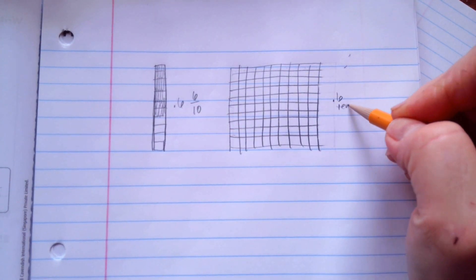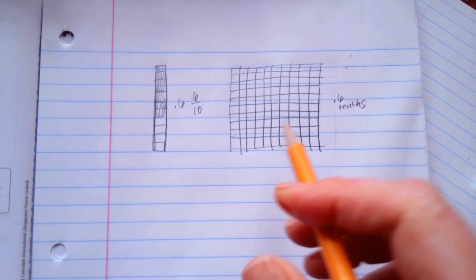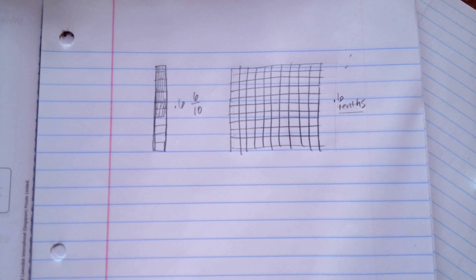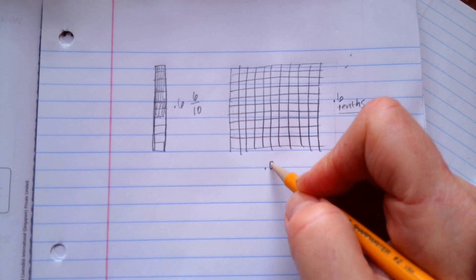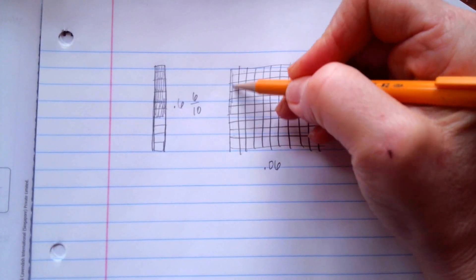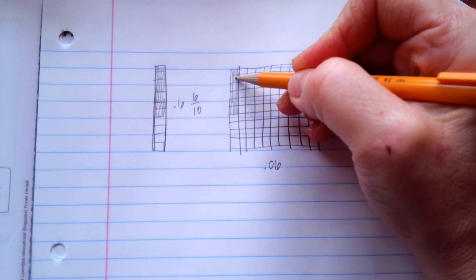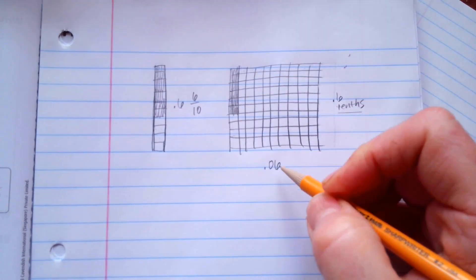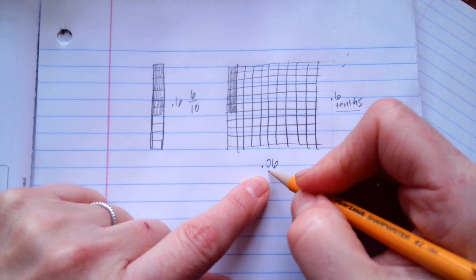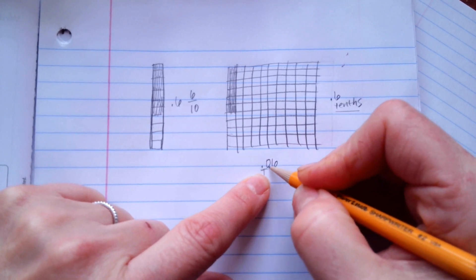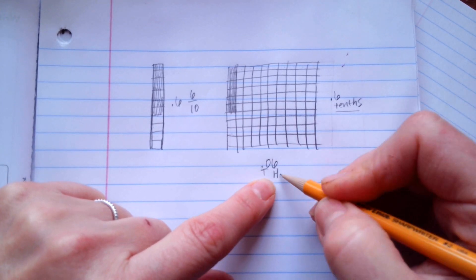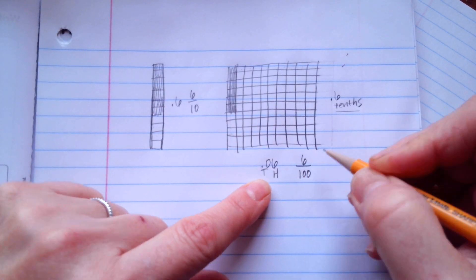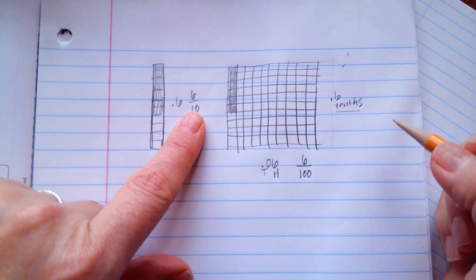It's because this is the tenths place, which means out of ten little pieces of something. The .06 tells you that it's six pieces — 6 out of 100. And the reason why I know that is because this is the tenths place and this is the hundredths place. So .6 means 6 out of 10, and .06 means 6 out of 100.